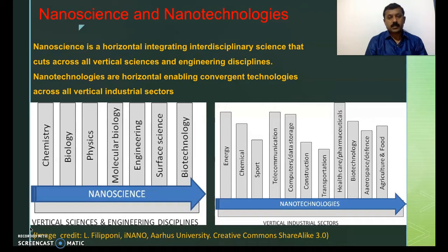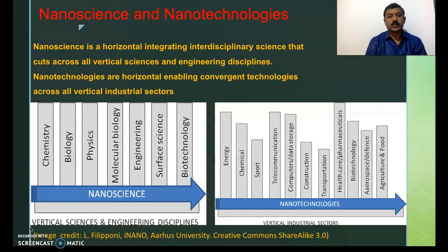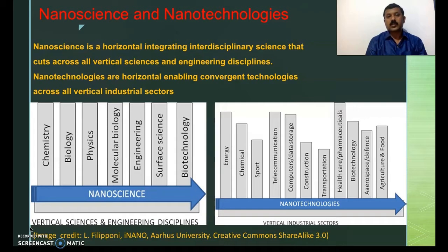Nanoscience and nanotechnologies are not isolated branches. Nanoscience is a horizontal integrating interdisciplinary science that cuts across various sciences and engineering disciplines. It includes chemistry, biology, physics, molecular biology, and various other engineering subjects. It also integrates various technologies like energy technology, chemical technology, telecommunication, computer technology, healthcare, biotechnology, etc. So it is an interdisciplinary science as well as an integration of various technologies.